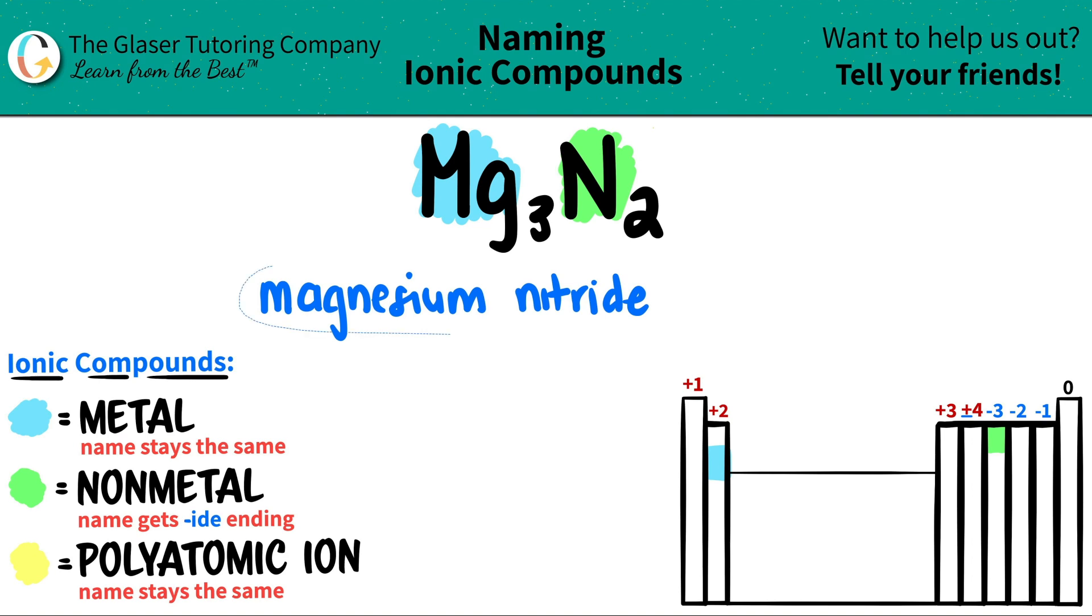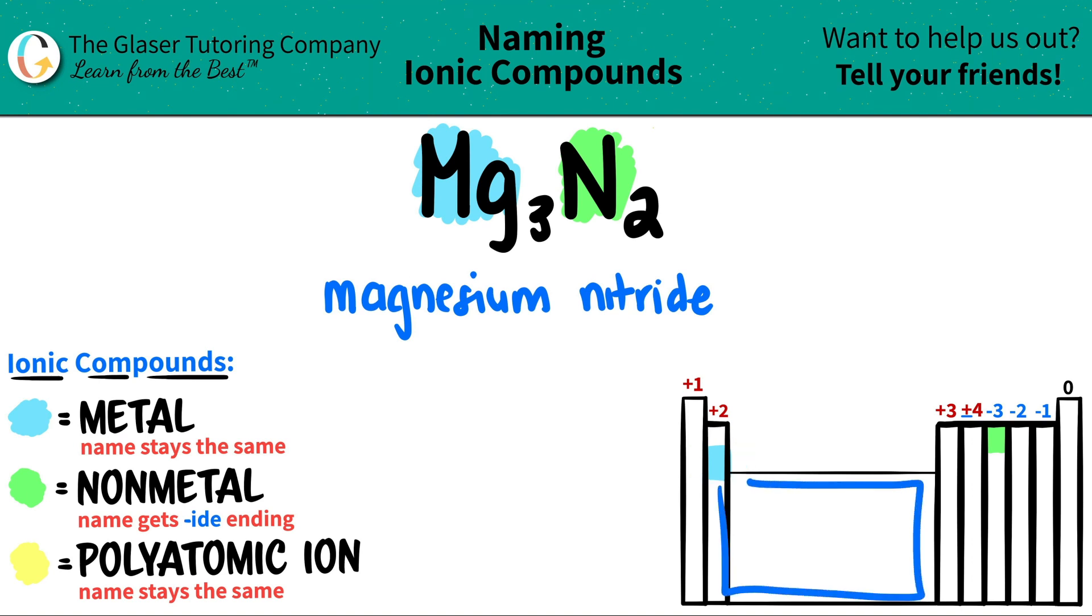Now, just make sure that magnesium, your metal, is not a transition metal. Magnesium isn't a transition metal because it's not in this group right over here, so we don't have to put a Roman numeral.